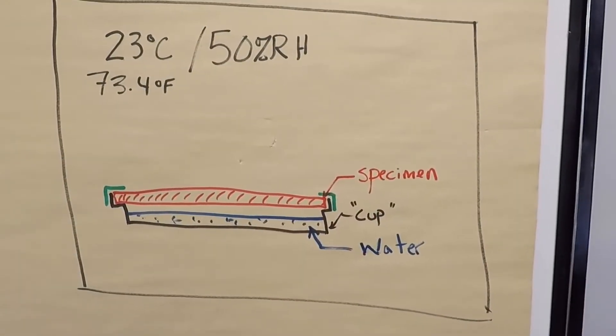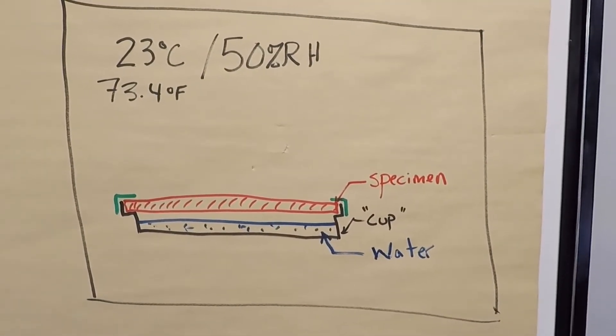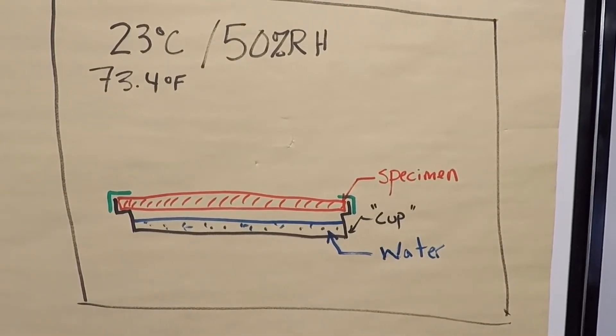Let's look at how we would set up a vapor permeance test in RDH building science labs or any other lab that would be used to do this kind of testing. If one were interested in doing an ASTM E96 vapor permeance test...